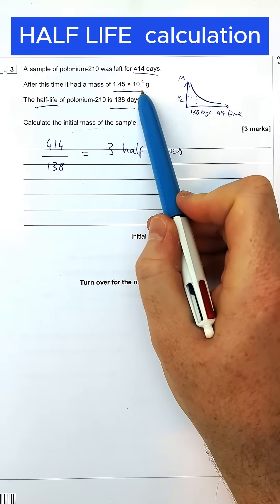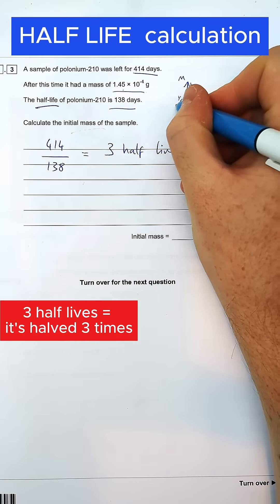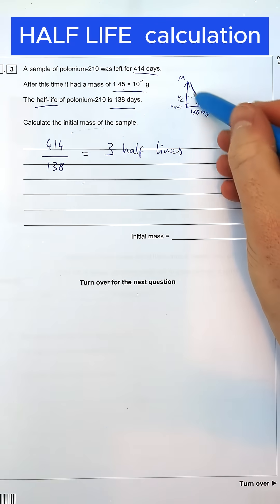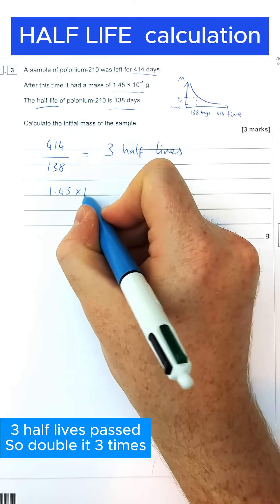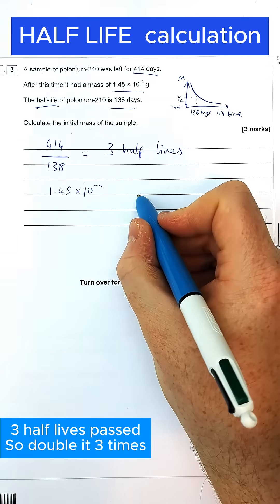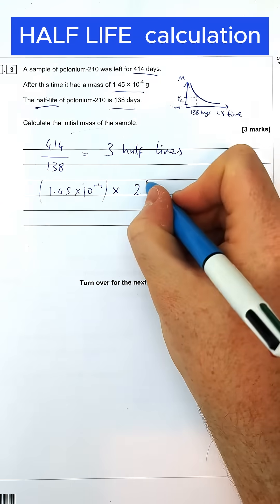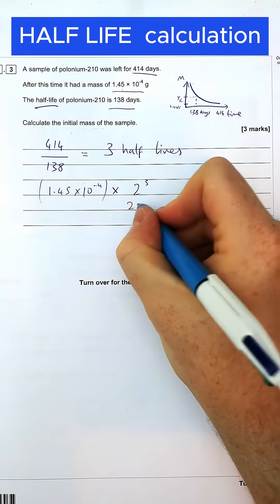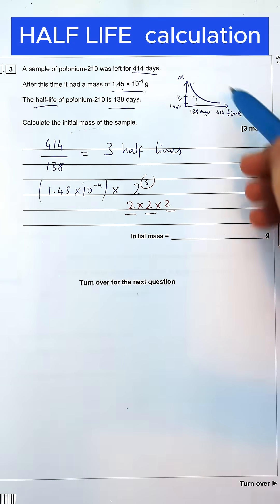If the final mass is 1.45 times 10 to the minus 4, what that means is this value here after that period of time is quite a small value. So to find out what it was initially, what we've got to do is basically double it three times because there's three half-lives. You could do this as 2 to the power 3, or you could do this is going to be equal to 2 times 2 times 2, which is the same thing, just to double it three times.